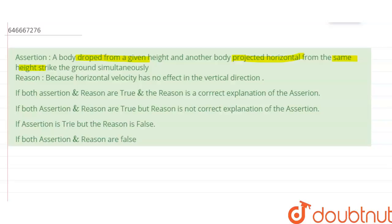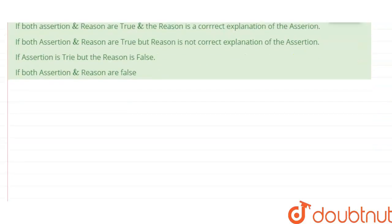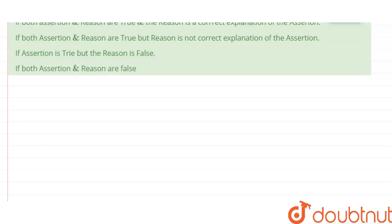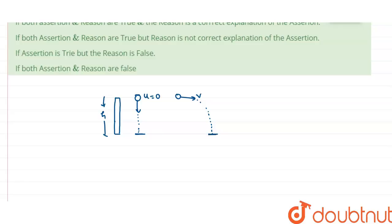The reason given is that horizontal velocity has no effect in the vertical direction. Let's check these statements. Suppose we have a building of height h. One body is dropped, so its initial velocity is zero. It falls under gravity and touches the ground. The second body is projected horizontally with velocity v from the same height h. This v is essentially the horizontal velocity.